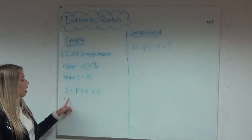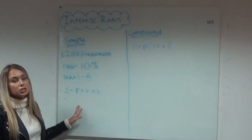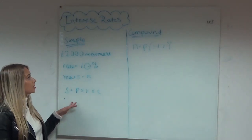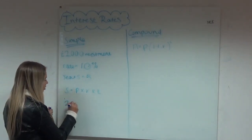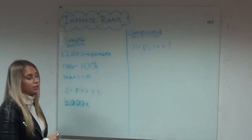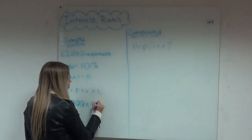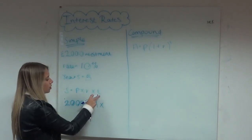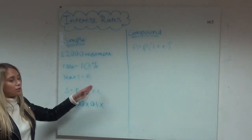So we've got the simple interest earned equals the principal value, which is the amount of money that's going to be invested, so we know that's £2,000 times the interest rate as a percentage, which we know is 0.1, and times the time in years, which is five.